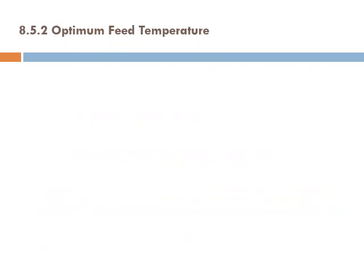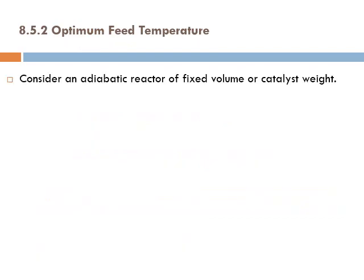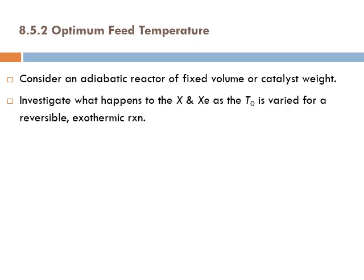Let's talk about optimum feed temperature. Consider an adiabatic reactor of fixed volume or catalyst weight — an existing reactor with a given volume or catalyst weight. We'll investigate what happens to the conversion and equilibrium conversion as the feed temperature T₀ is varied, for a reversible exothermic reaction.